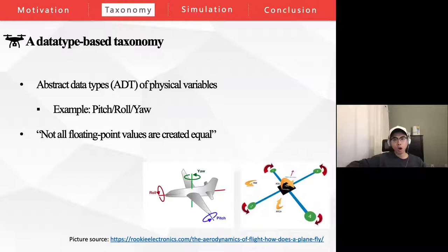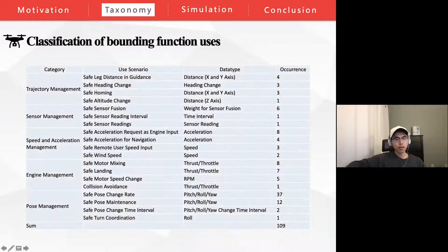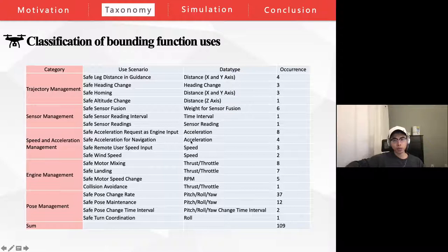Overall, our data type-based taxonomy can be summarized as: not all floating values are created equal. By refining them into data types, their logical roles in UAV software start to emerge. We identified 109 BF instances that are directly related to UAV safety and classified them into five categories: the management of trajectory, sensor, speed and acceleration, engine, and pose.